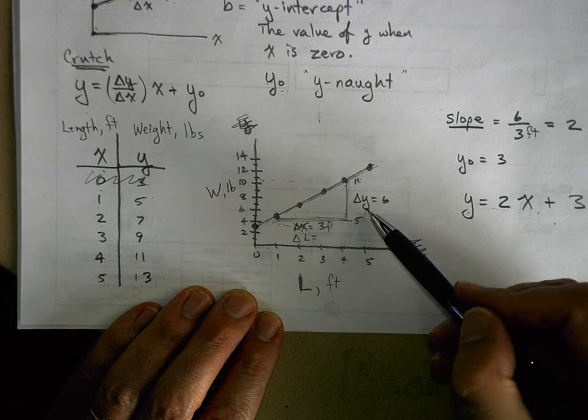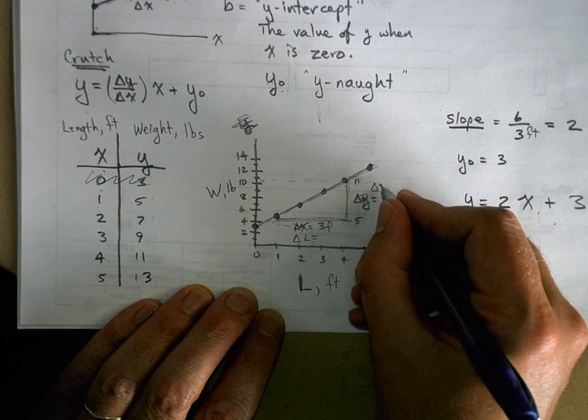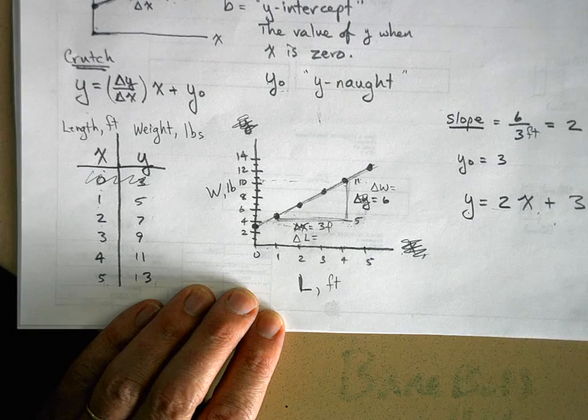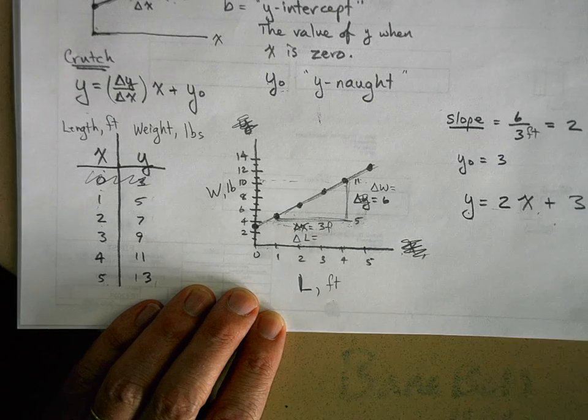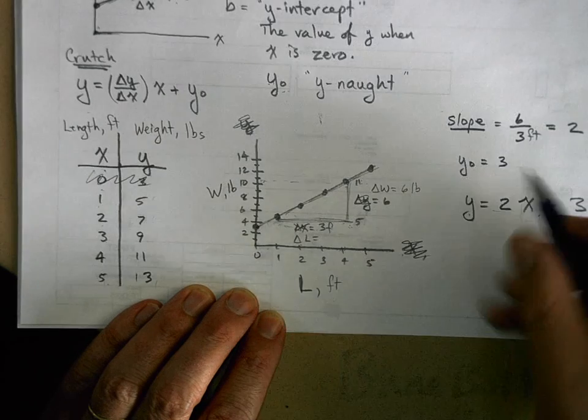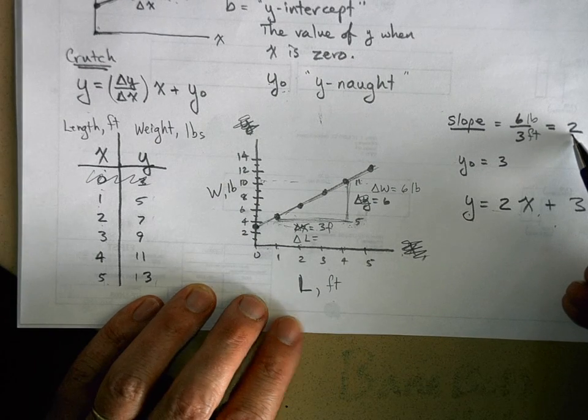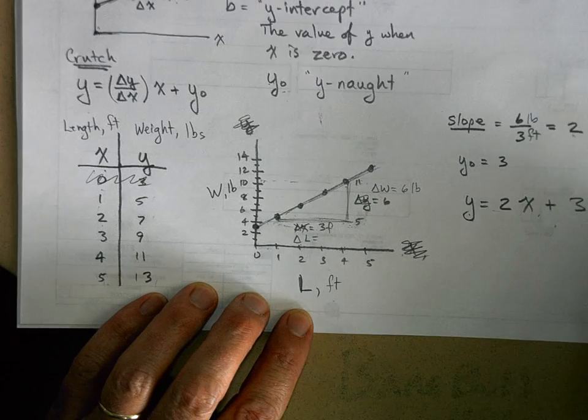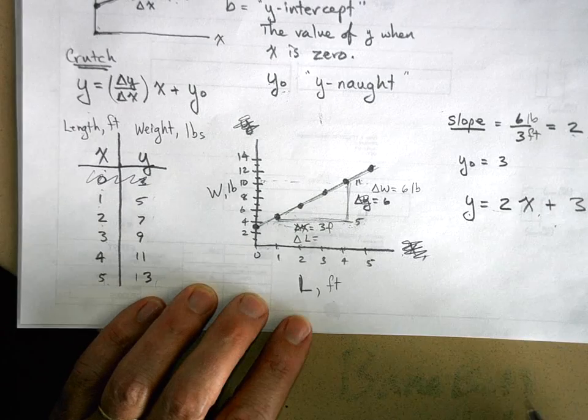And this delta y, what is the delta y? Oh, it's not delta y, it's delta w. That's okay. The change in weight. Delta means change in, right? Change in what? Weight. Change in weight. Six what? Pounds. So this is pounds. So what is this two? This is two what? Two pounds per feet, or pounds per foot.